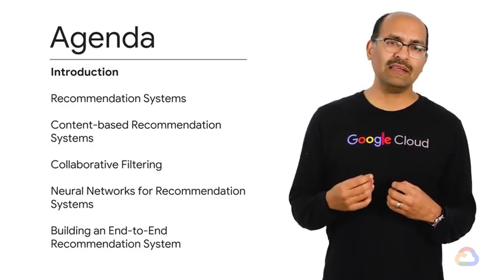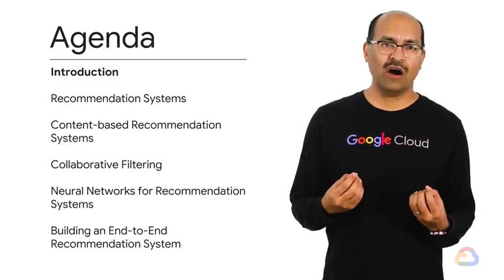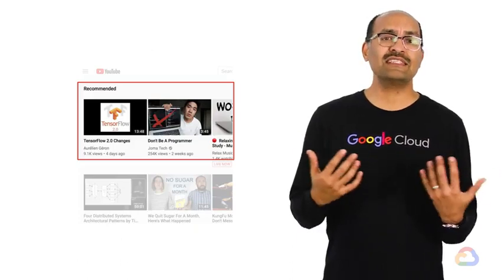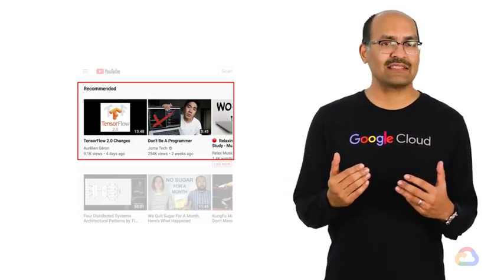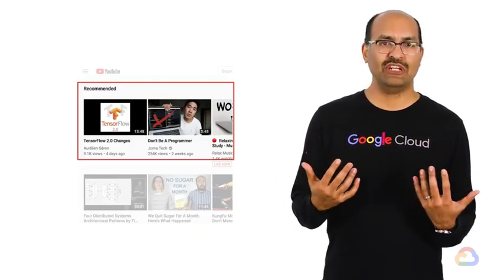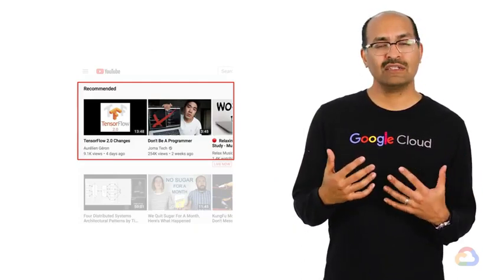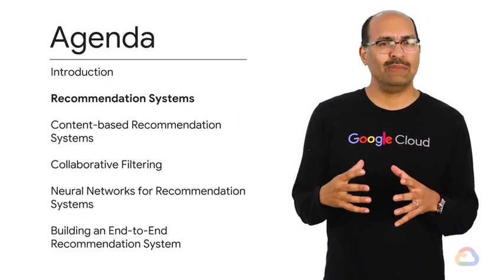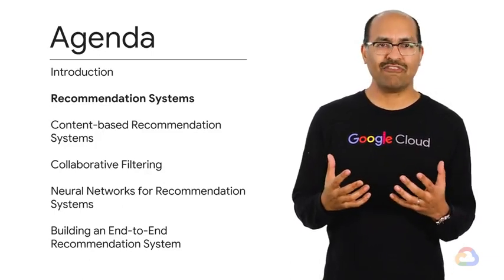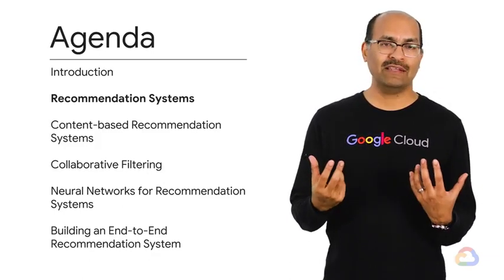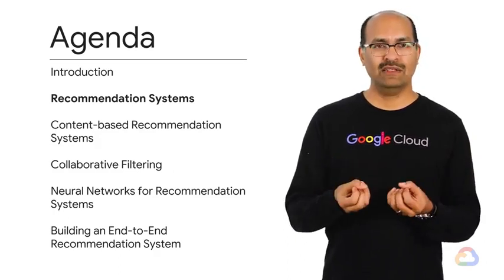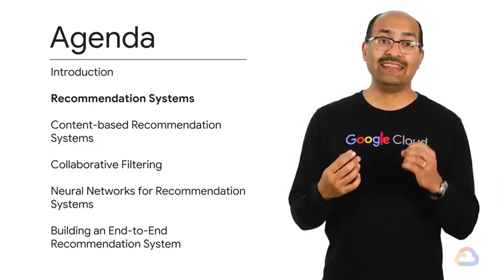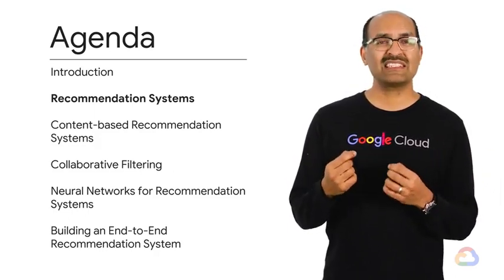We start out by explaining what recommendation systems are. When you watch a video on YouTube and you see a list of suggested videos to watch next, that list is being built by a recommendation machine learning model, often called a recommendation engine. The ML model alone is not enough — someone needs to build a data pipeline to collect whatever input data the model needs, such as the last five videos that you watched. That is done by a recommendation system.